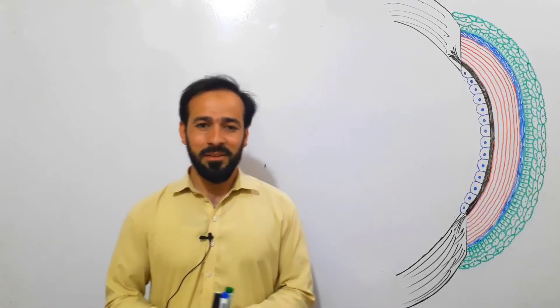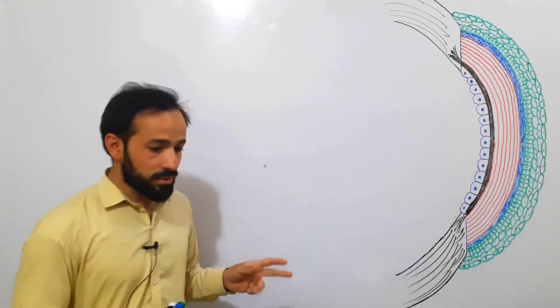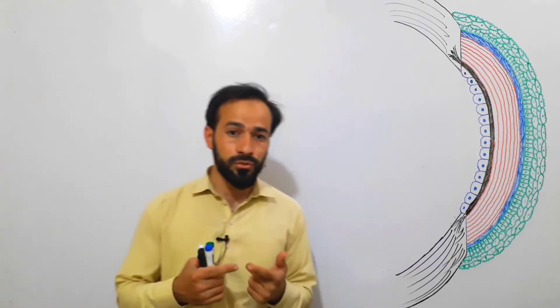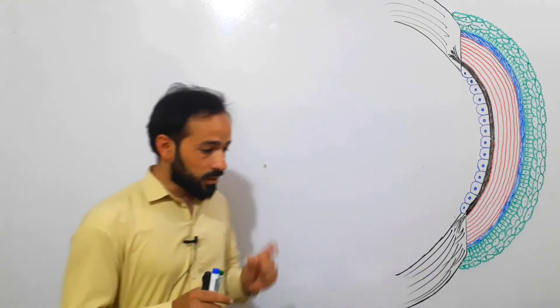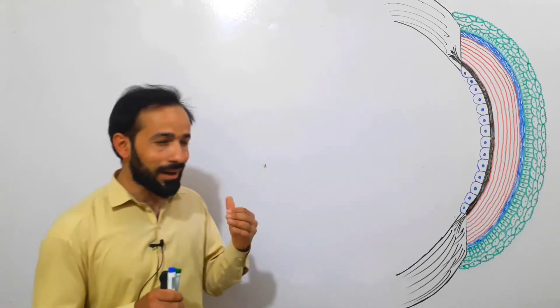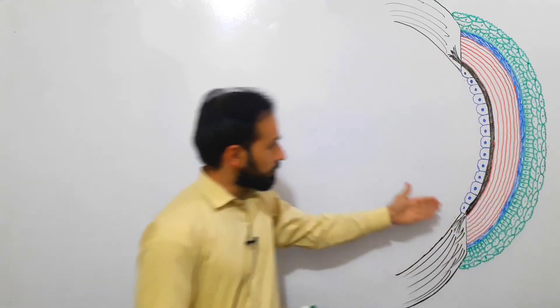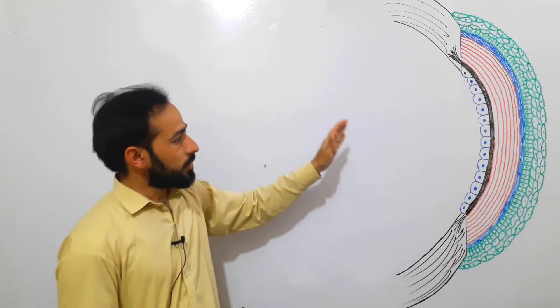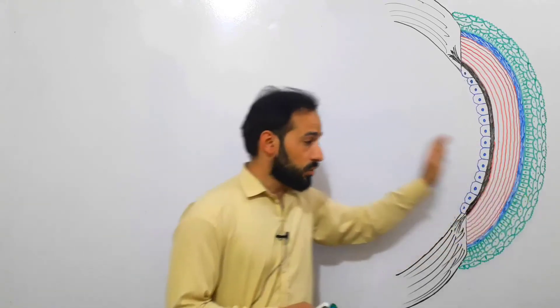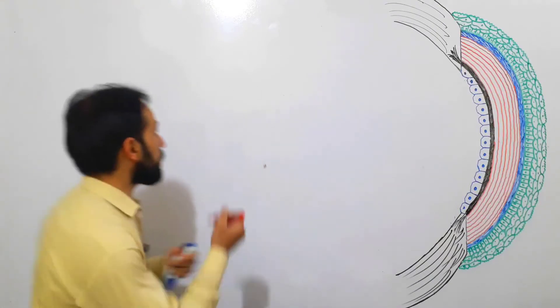Welcome back, friends. We have started discussing the structure of the human eye. In the previous two lectures, I introduced the eye and its outer landmarks. Now we are starting to discuss each part of the eye in detail. As you can see, I have drawn a diagram showing the cornea. Right now we are discussing the structure and functions of the cornea.